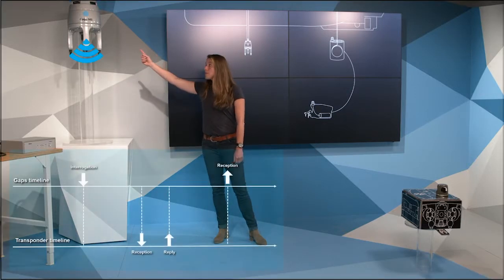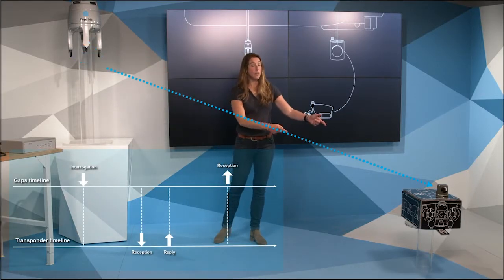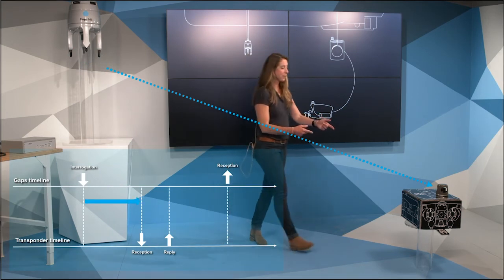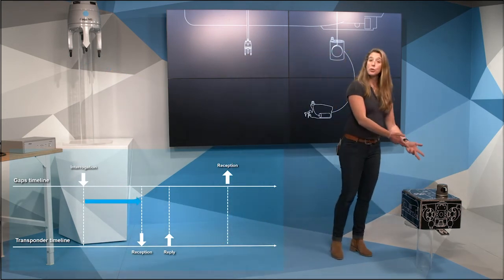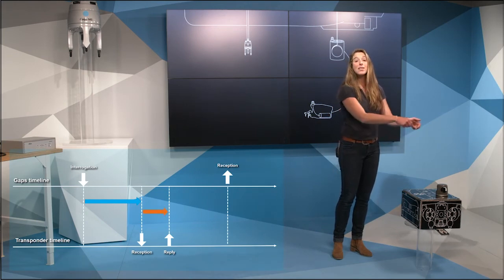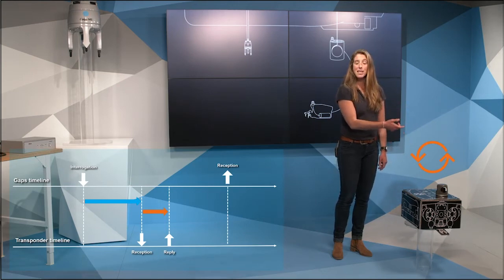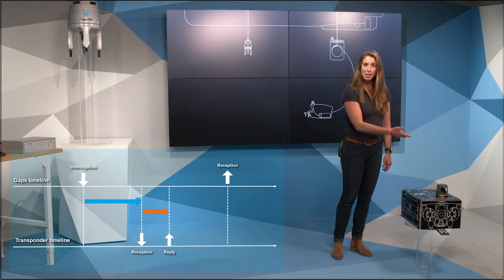The GAPS interrogates the beacon. This is the first travel time. The beacon receives the signal and goes in the silent mode. This is the turnaround time. In our example, this turnaround time is set to 90 milliseconds. This is perfect for shallow water applications.